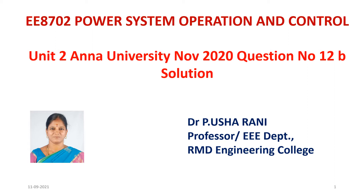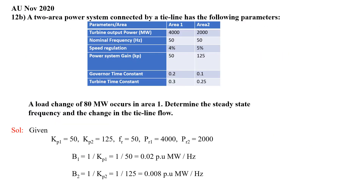I am going to solve a question from the recent question paper — November 2020, question number 12B. The question: a 2-area power system connected by a tie line has the following parameters. Area 1 turbine output power is 4000 MW, area 2 is 2000 MW, nominal frequency 50 Hz for both areas, speed regulation 4% for area 1 and 5% for area 2, power system gain KP value 50 for area 1 and 125 for area 2. A load change of 80 MW occurs in area 1. Determine the steady-state frequency and change in tie line power flow.